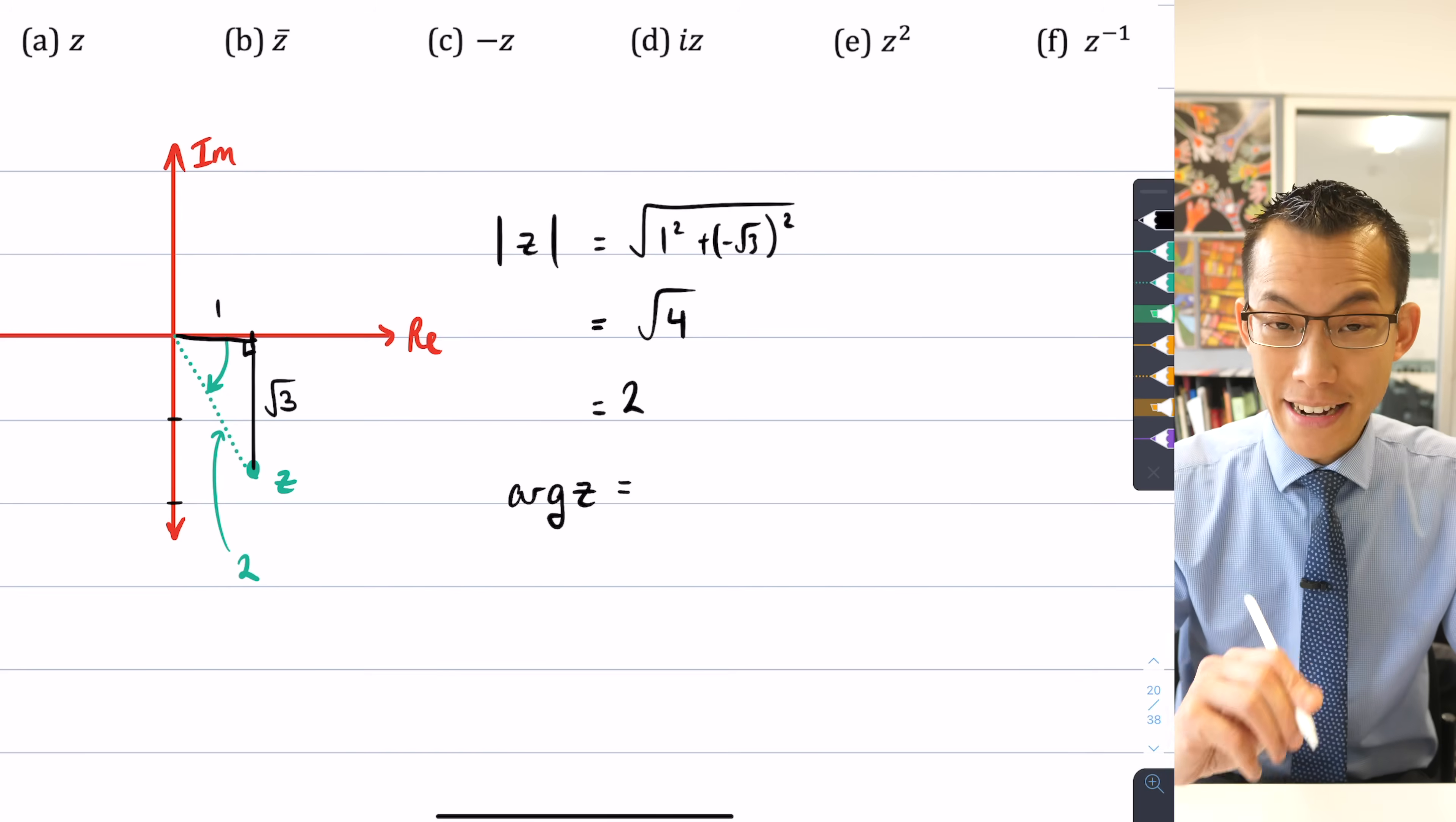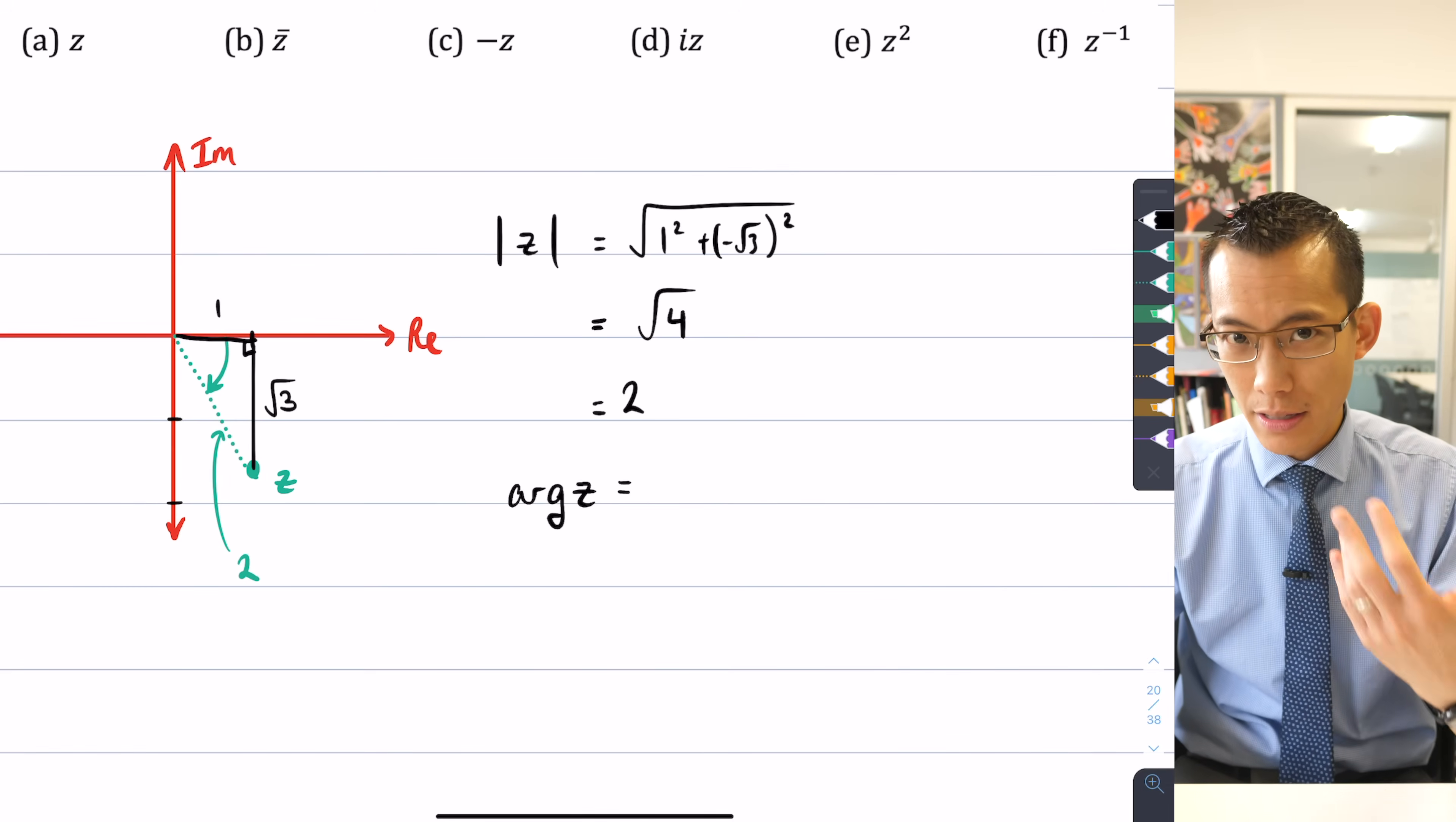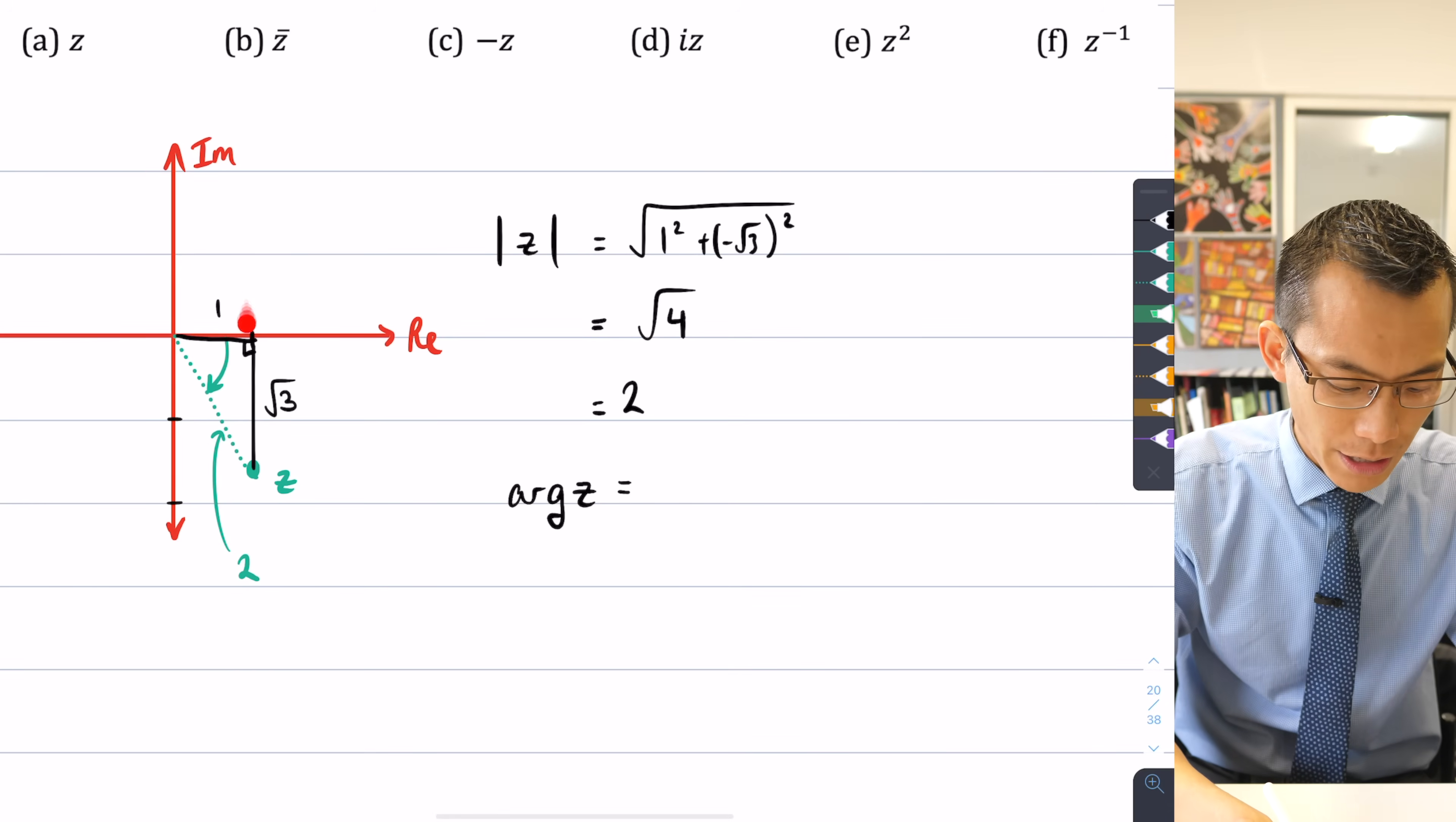Now, before I go ahead and write down π/3, I notice that the direction of the angle matters. So whether I go clockwise or anti-clockwise is important when we're describing where the number is. If I went π/3 radians anti-clockwise from the real axis, the positive real axis, I'd be going up in this direction, right?